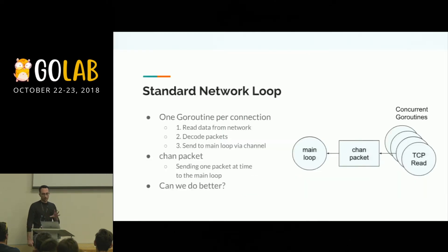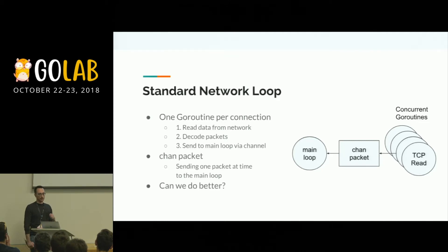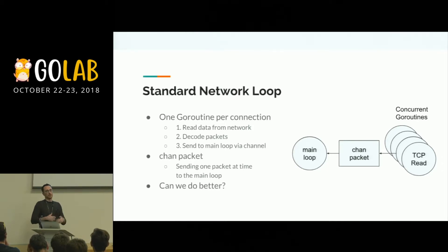The first naive implementation is to spawn a single goroutine for every connection. Each goroutine reads data from the network socket, unmarshals the packets, and sends every packet one by one to the main loop goroutine via a channel. This approach doesn't work well in our case because the main loop goroutine is not fast enough to dequeue all the individual packets from the channel.